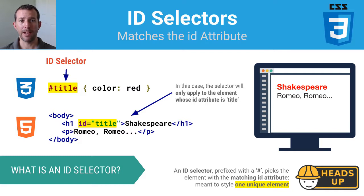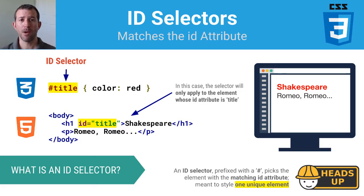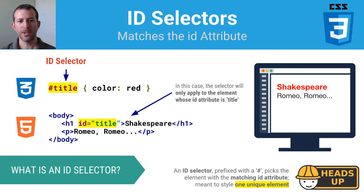Now we're getting into some of the more interesting and useful types of selectors — the ID selector. Think about the word ID, like identifier. Most people have an identifier, whether it is a social security number, a student ID, or a name that makes them unique. ID selectors are to be used for unique things. If you have an individual unique item on the page that you want to style separately from other elements, you would use an ID selector. Here I have an H1 heading with an ID attribute called "title." Notice the hashtag or pound sign in front of title in the style rule — it finds any element on the page whose ID is "title" and styles it that way. So if you want to style an individual unique item, you will want to use an ID selector.